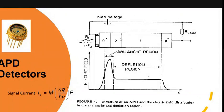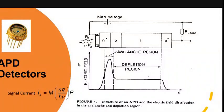After the avalanche effect takes place, there is current flow in the circuit. When the device reaches the threshold point for the avalanche effect, that point is called 'reach through.' So the APD can also be called a reach-through device, or reach-through avalanche photodiode — in short, RAPD or APD.